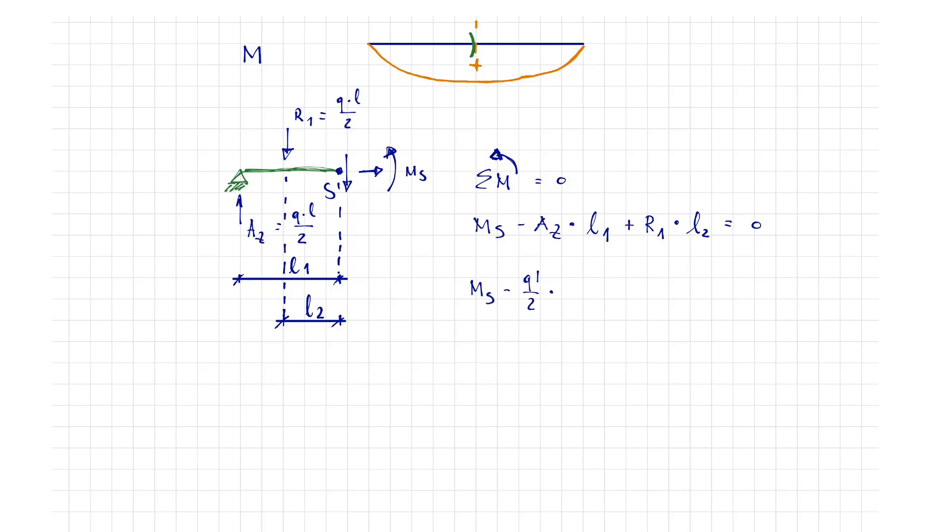Overall, we get the equation: M_S minus QL through 2 times L through 2 plus QL through 2 times L through 4 equals 0.